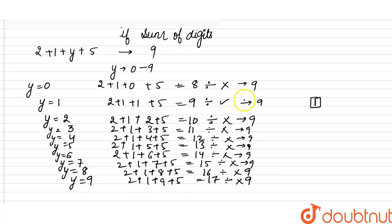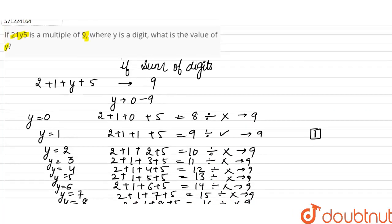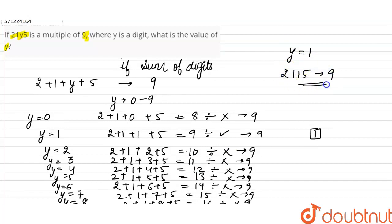So we can say that when y is equal to 1, the number is 2115, and this is a multiple of 9.